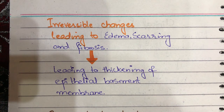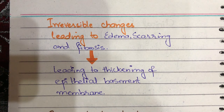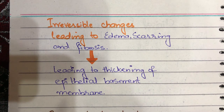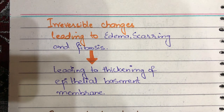When the epithelial basement membrane thickens, flexibility is lost. So airway thickening begins to occur. Airways that were previously flexible — through which air easily passed — now become thick, causing airway space narrowing.